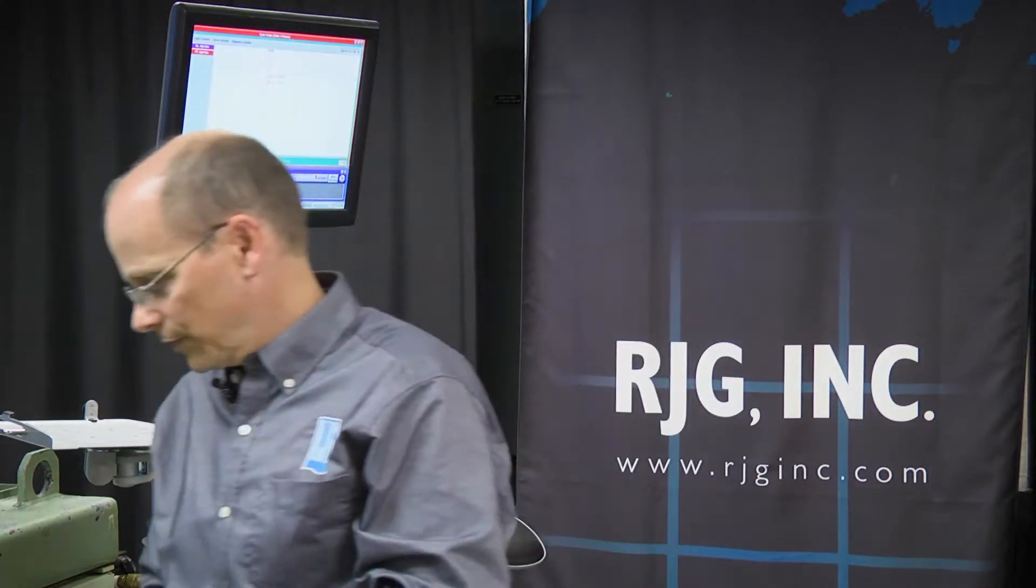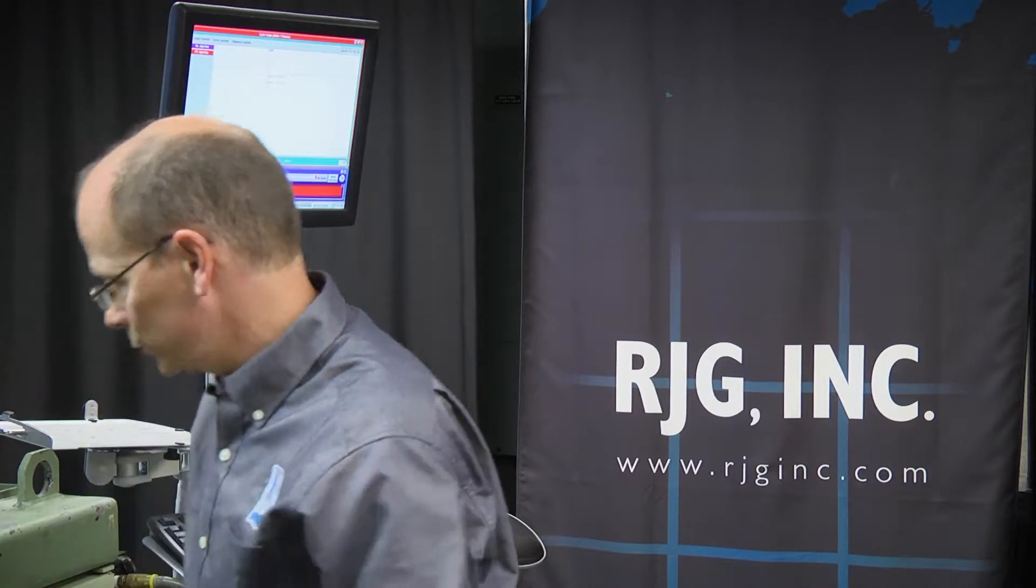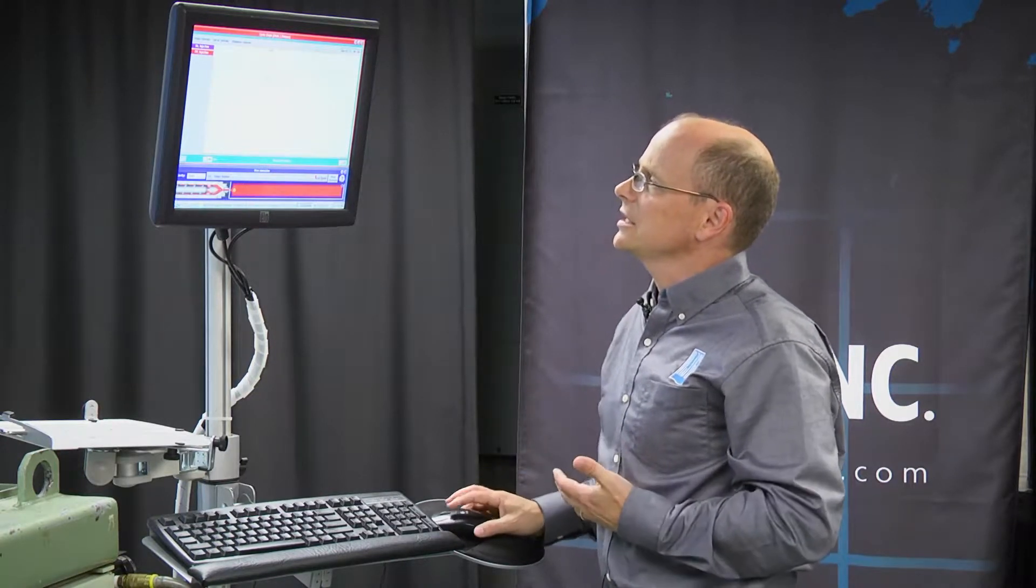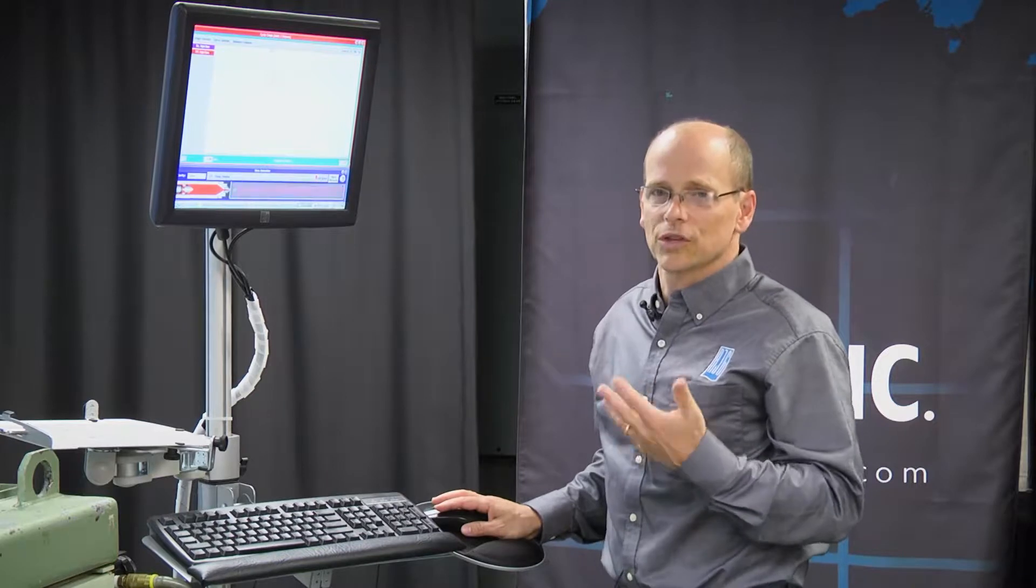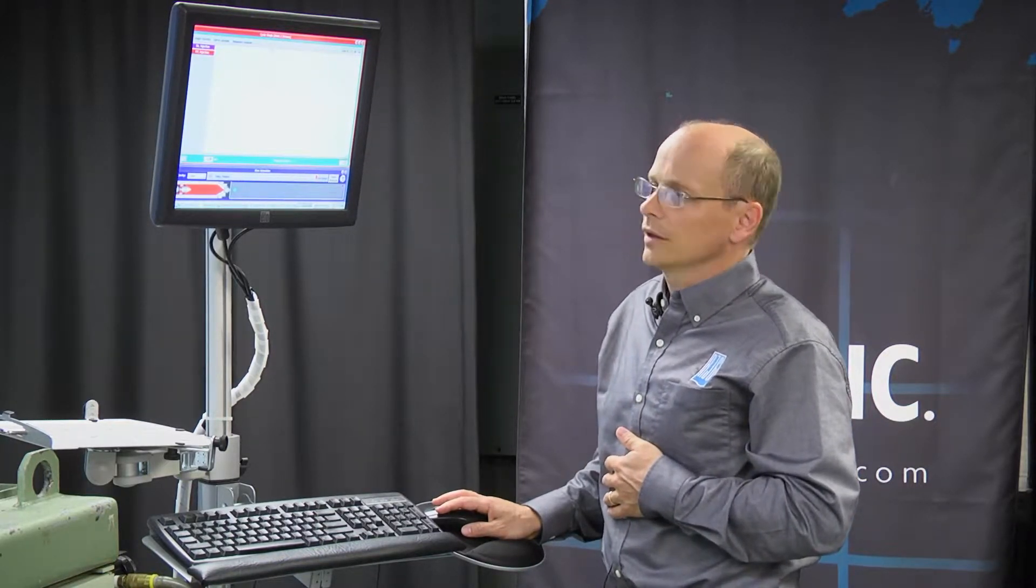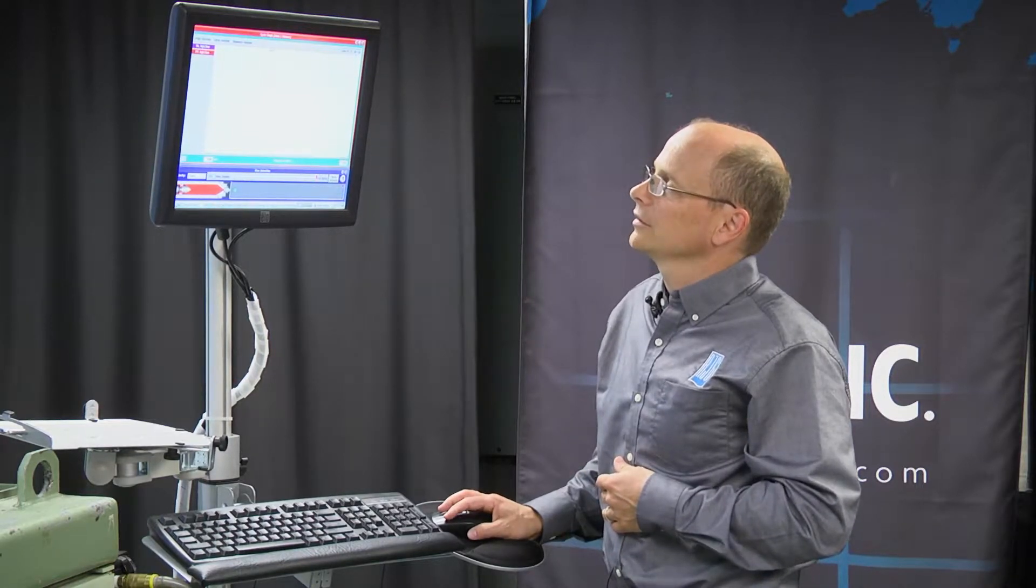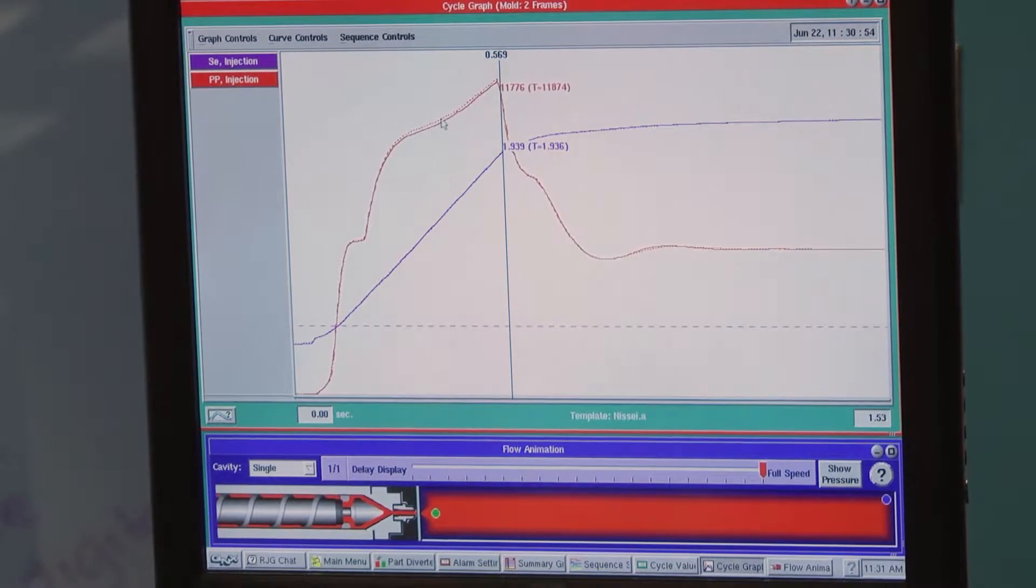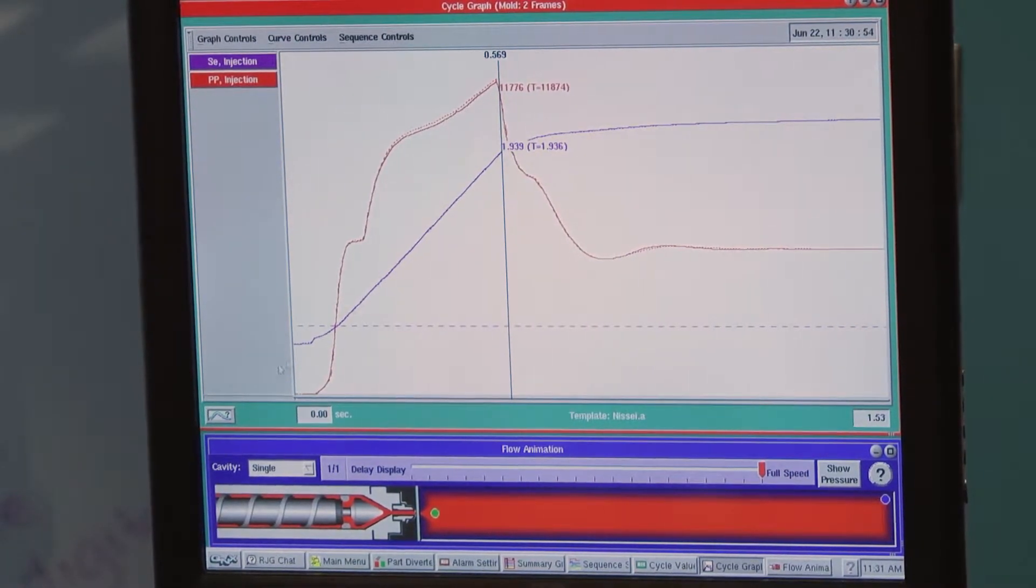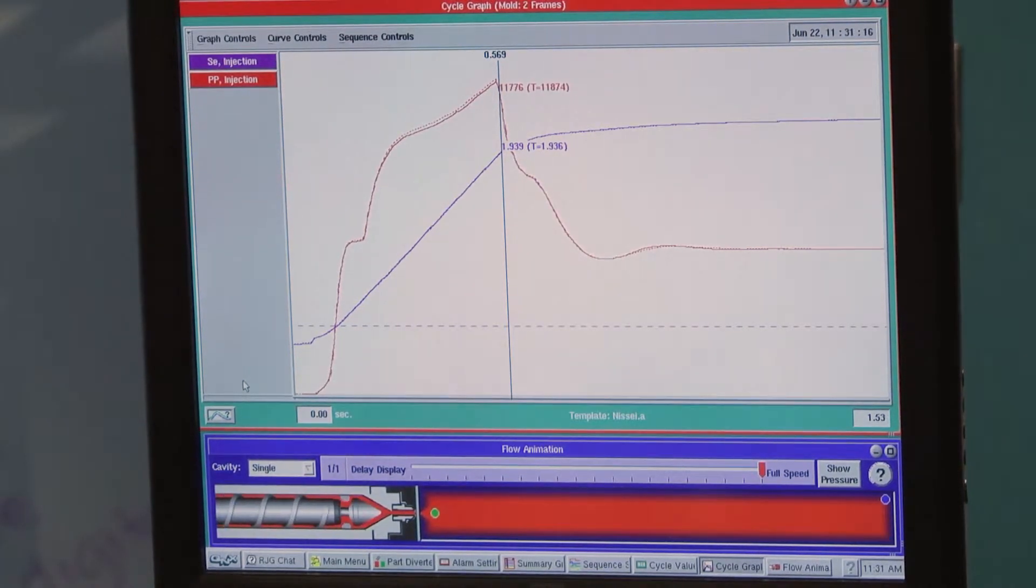So if we come back to our fill speed and adjust it, let's see if we can get these two curves to match up a little bit better. We'll wait for just a moment for the start of the next cycle. And here we go. Now we're matching both curves very closely.